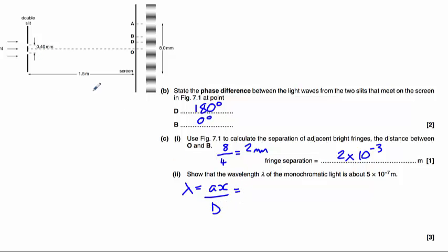Where A is our slit separation which we know to be 0.4 millimetres times 10 to the minus 3, multiplied by our fringe separation, 2 times 10 to the minus 3, divided by the distance between the slits and the screen which is 1.5 metres. Which gives us 5.33 times 10 to the minus 7 metres.